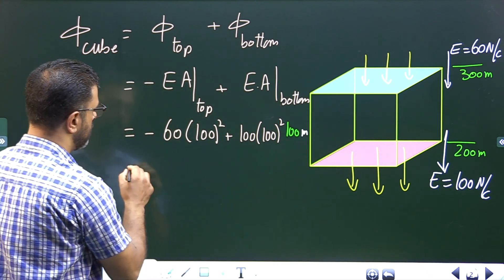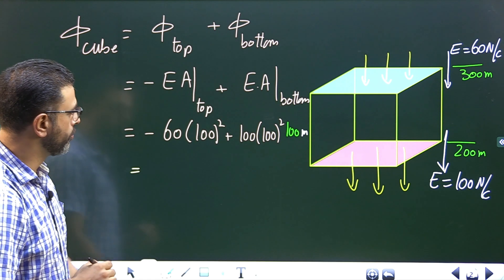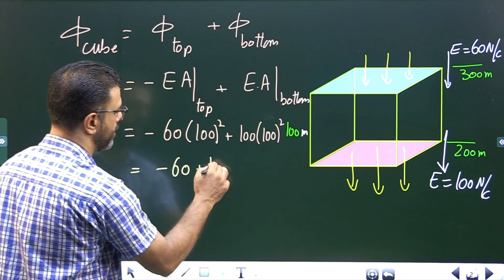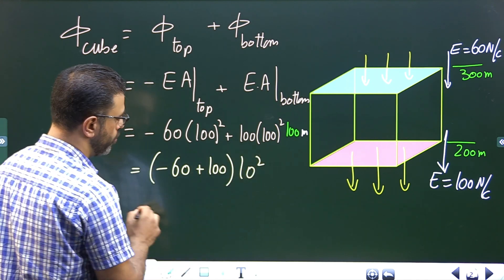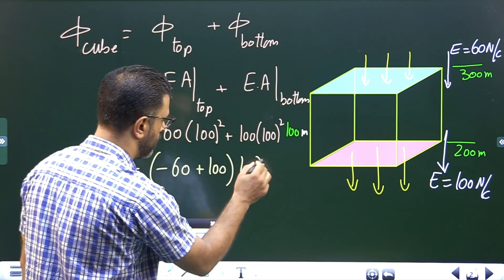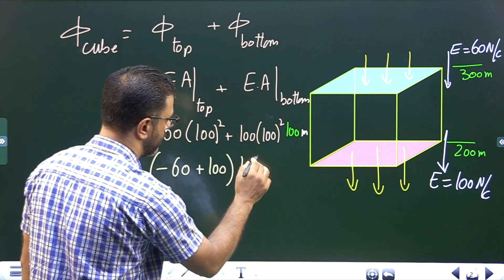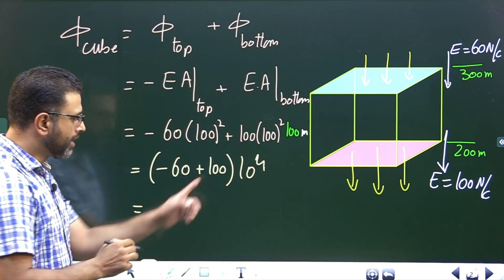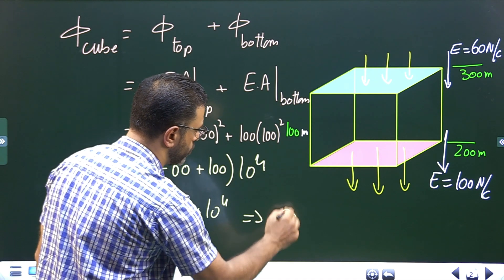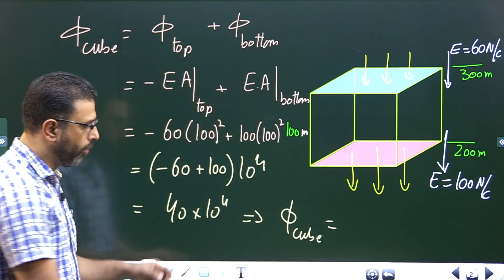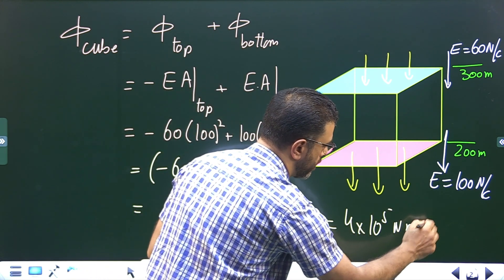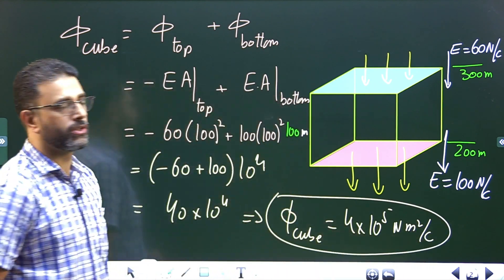So flux through the cube equals 10 to the power 2 taken common, times (minus 60 plus 100), which is 40. So 40 times 10 to the power 4, which gives flux through the cube equal to 4 times 10 to the power 5 newton·meter squared per coulomb.